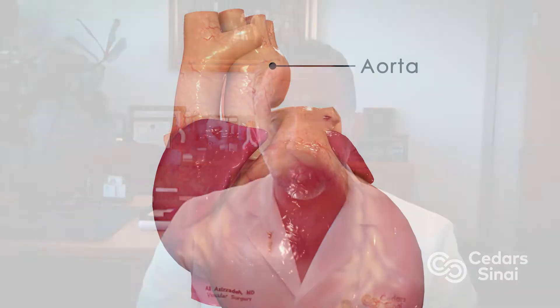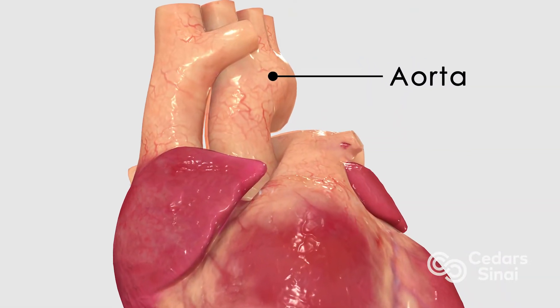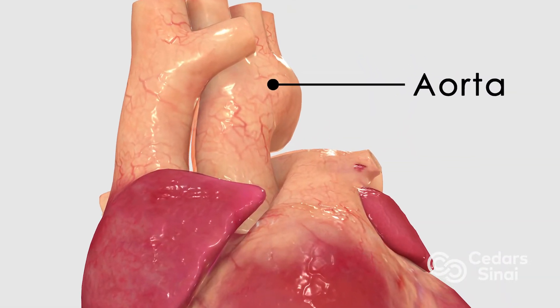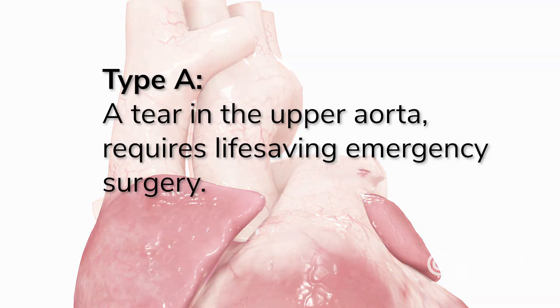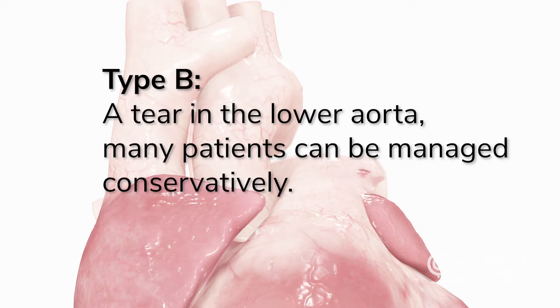If the tear is in the front part of the aorta close to the heart, that's called a type A dissection, and those patients need emergency surgery. If the tear is in the back part of the aorta, that's called a type B dissection — sometimes we can treat those patients with medicines before we intervene.